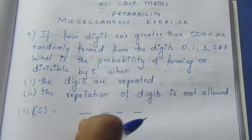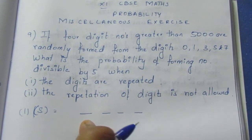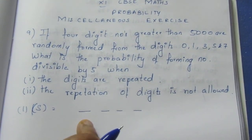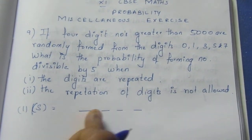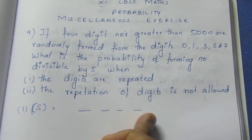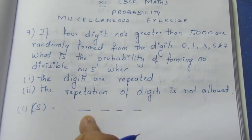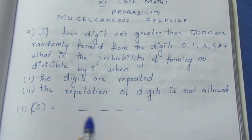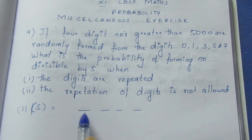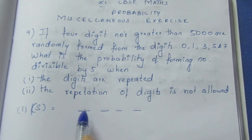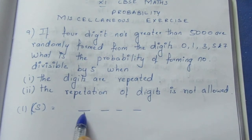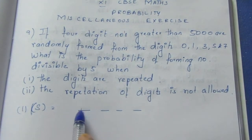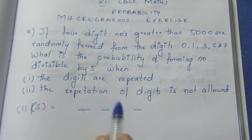For a 4-digit number greater than 5000, the first digit must be 5 or 7. If you put the first digit as 5, we get numbers in the 5000s. If the first digit is 7, we get numbers in the 7000s. So we can fill the first digit in 2 ways.